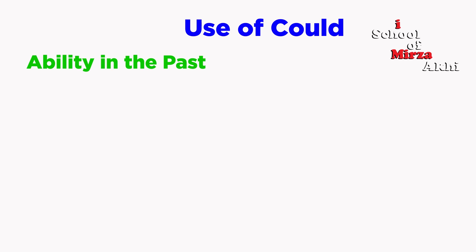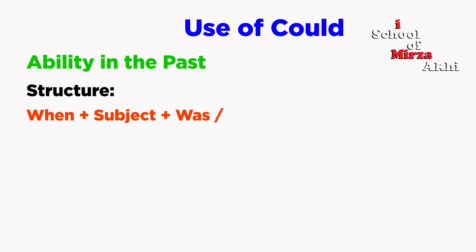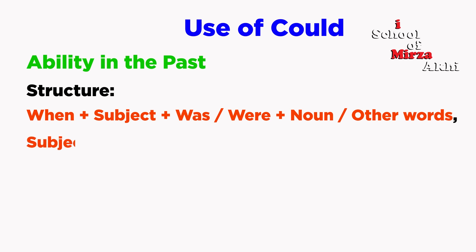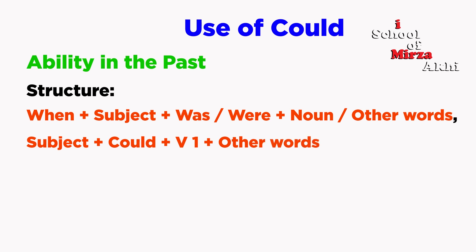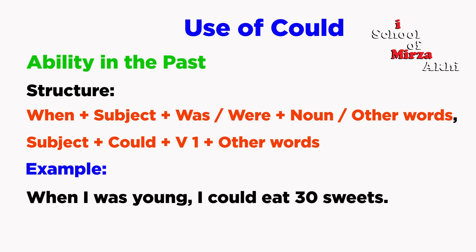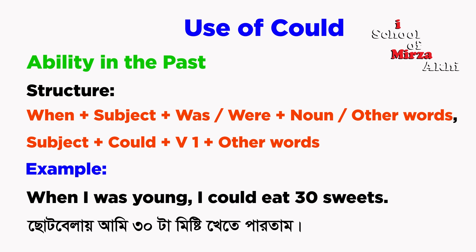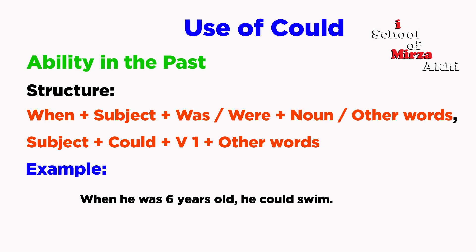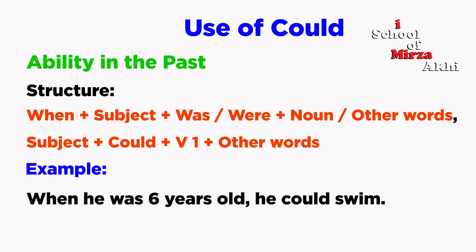Could is also used for ability in the past. Structure: Subject plus could plus V1 plus other words. For example: When I was young, I could eat 30 sweets. When he was six years old, he could swim.